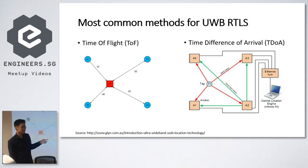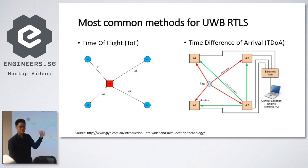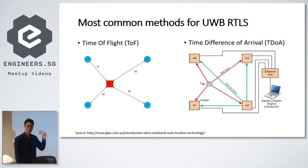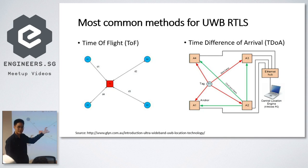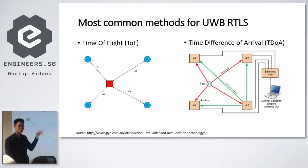The other method is Time Difference of Arrival, in which every single anchor is connected to a central server by Ethernet cable and needs to be time-synced — it's very sensitive. The tag sends out a ping which is detected by all the anchors, and this is how it ranges — you get a range between every single anchor and tag, and you can estimate the position of the tag.